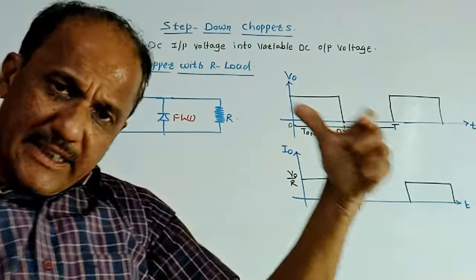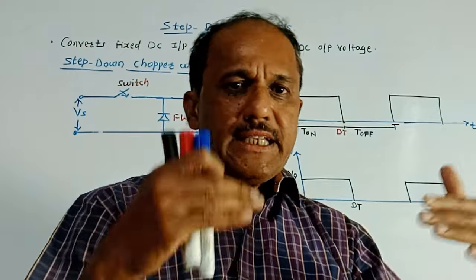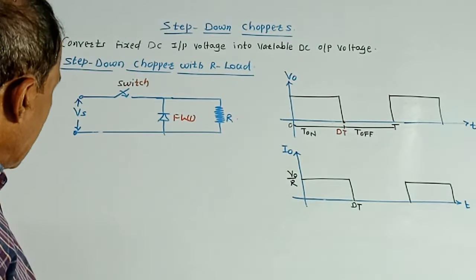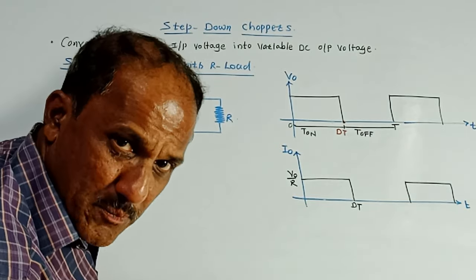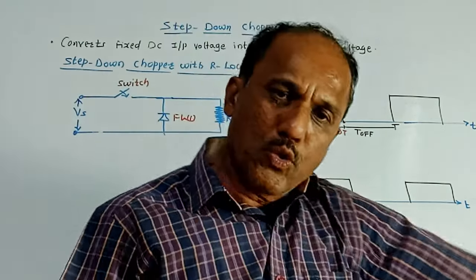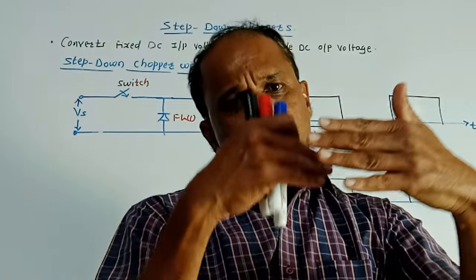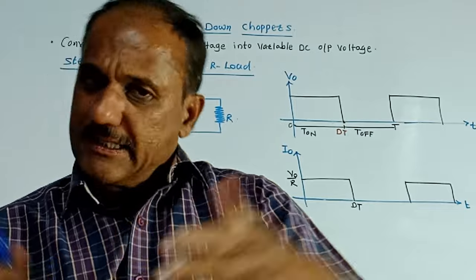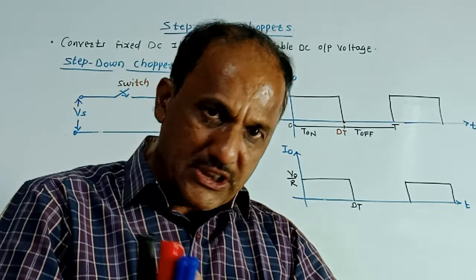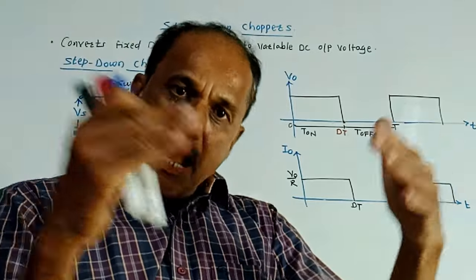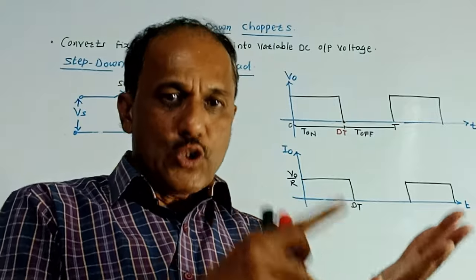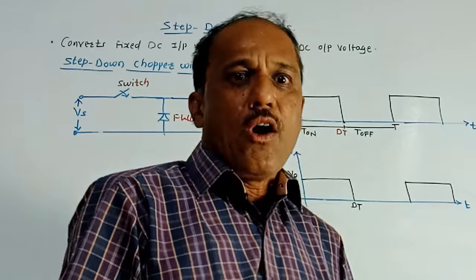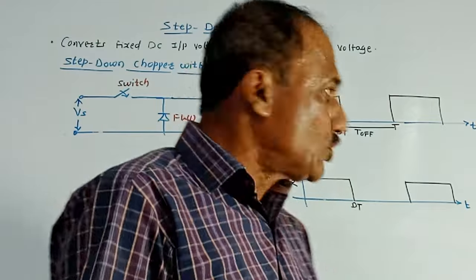Chopper is a device which is also called DC to DC converter. Its definition is it converts fixed DC input voltage into variable DC output voltage directly. So such type of circuits are DC to DC converters. That means they convert fixed DC into variable DC. And such circuits are used in voltage regulator circuitries like SMPS or battery charging circuitries and so on.